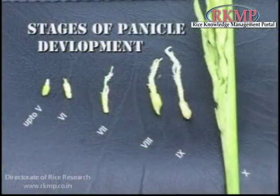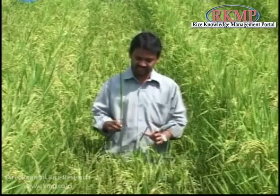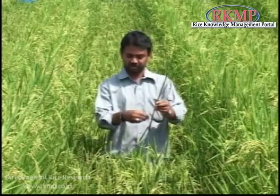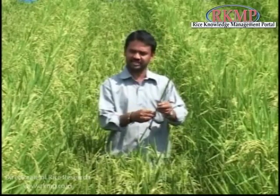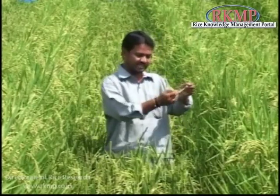There are 10 different stages of panicle development. Adjustment of flowering can be done by adopting measures during the first three to five stages of panicle development.